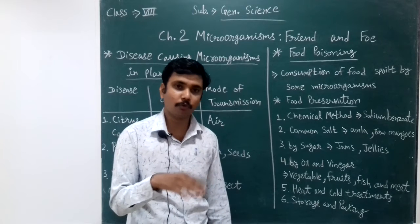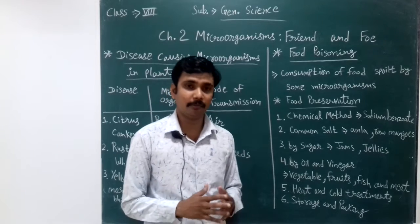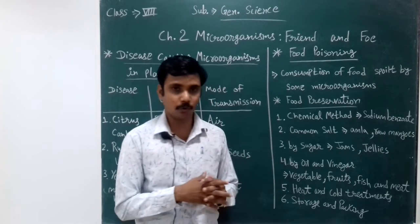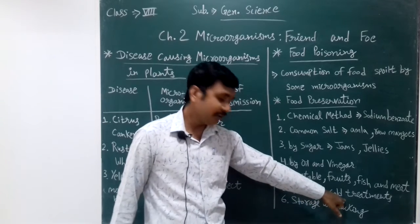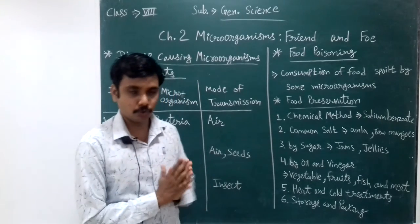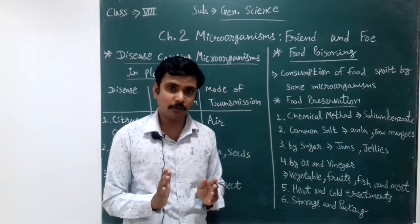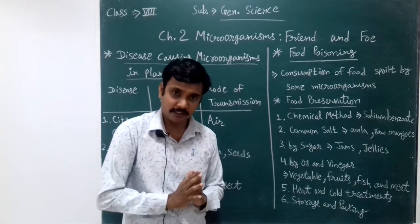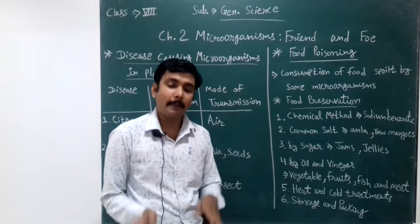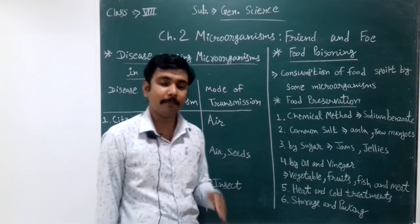Number five is heat and cold treatment. For heat treatment, we can boil water to make it safe to drink. For cold treatment, we keep food refrigerated so we can eat it later. An example of cold treatment is pasteurization, which was discovered by a scientist. In pasteurization, milk is boiled at 70 degrees centigrade for 32–35 seconds, and after that it is chilled. This is the process of pasteurization.